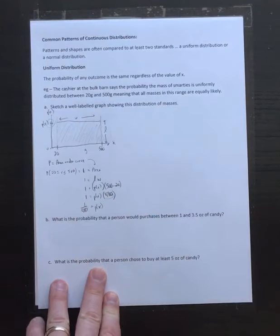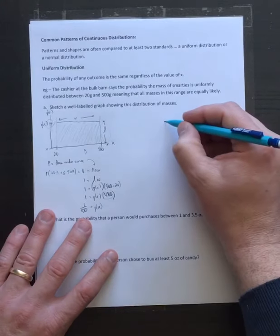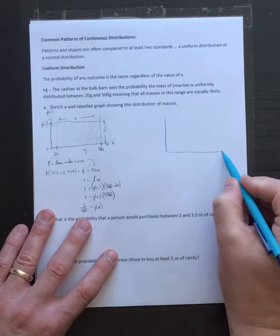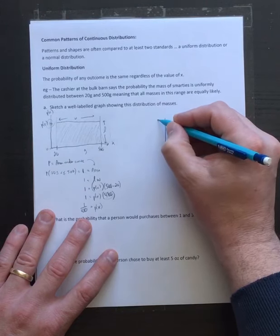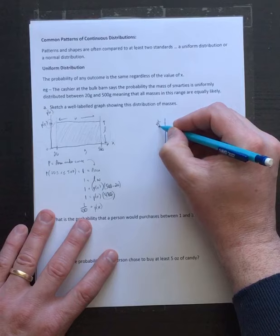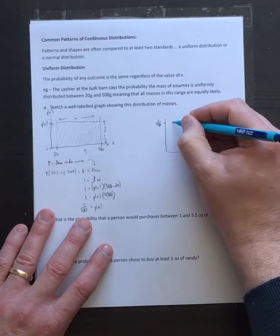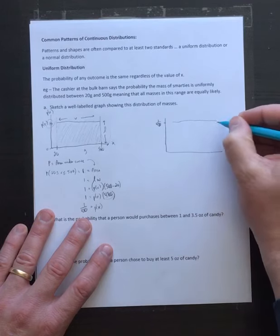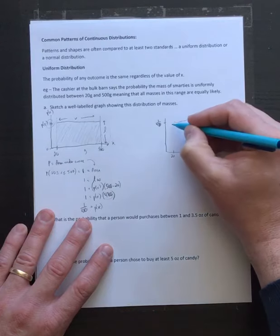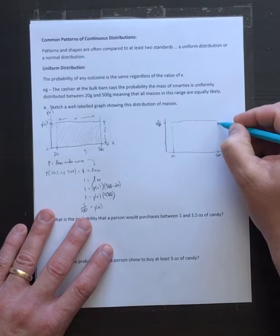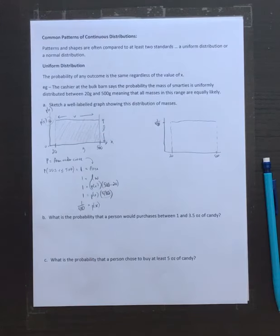Once I have that particular value - worked out with colors in your notes, so have a look - I can do a final labeling of a proper graph and actually use it for calculations. That's really the reason we're doing this. So this is going to be 1/480. I draw my line from 20 to 500.